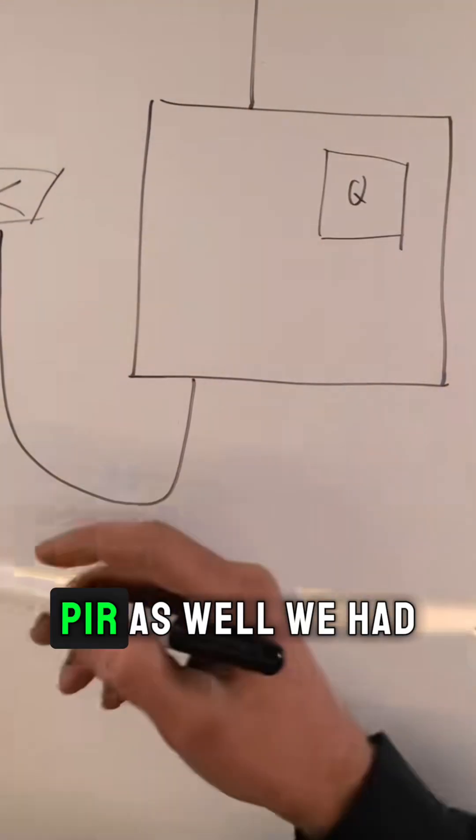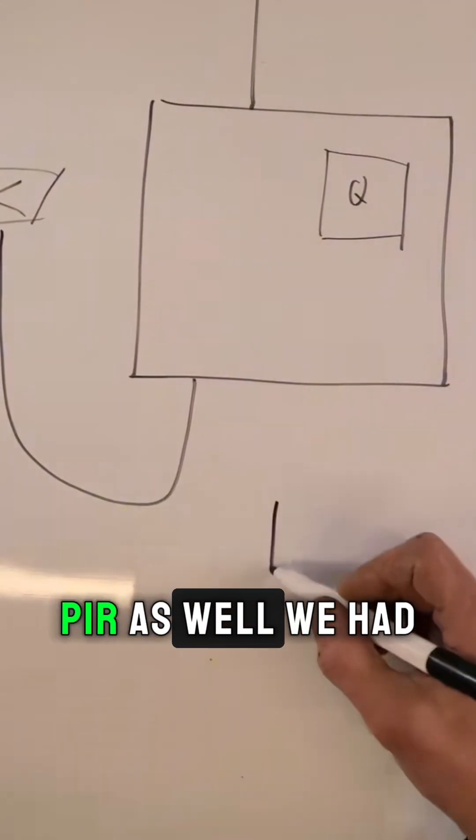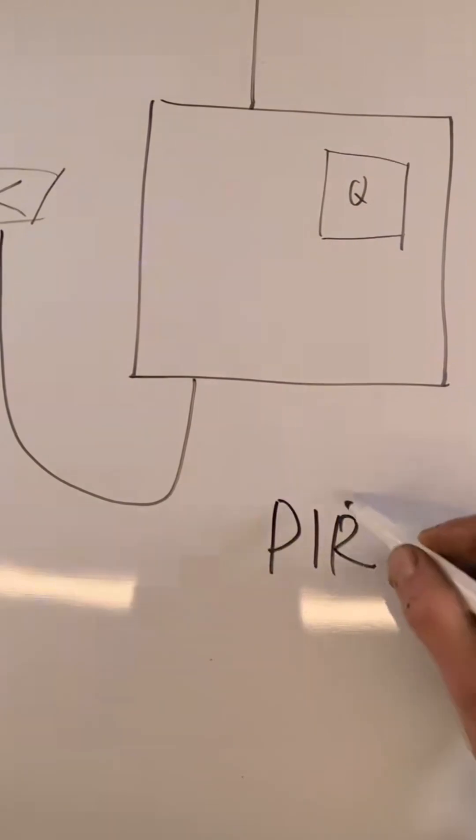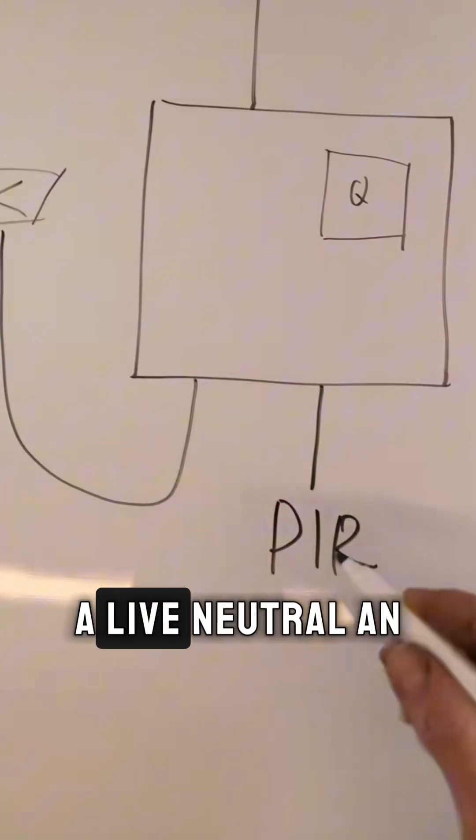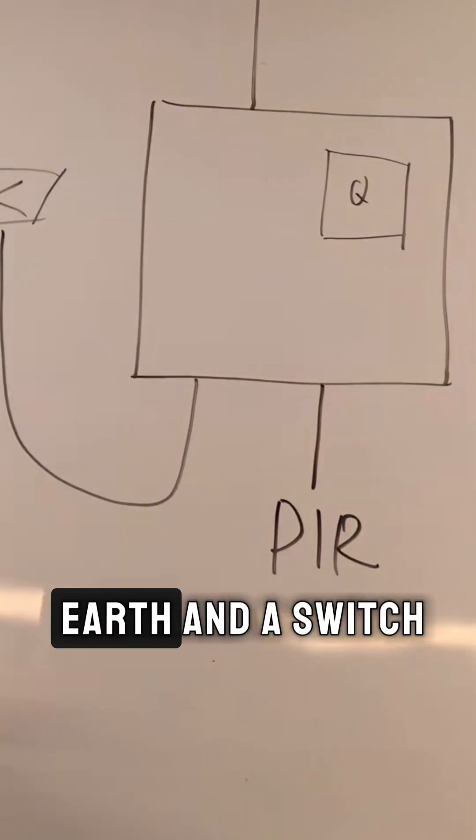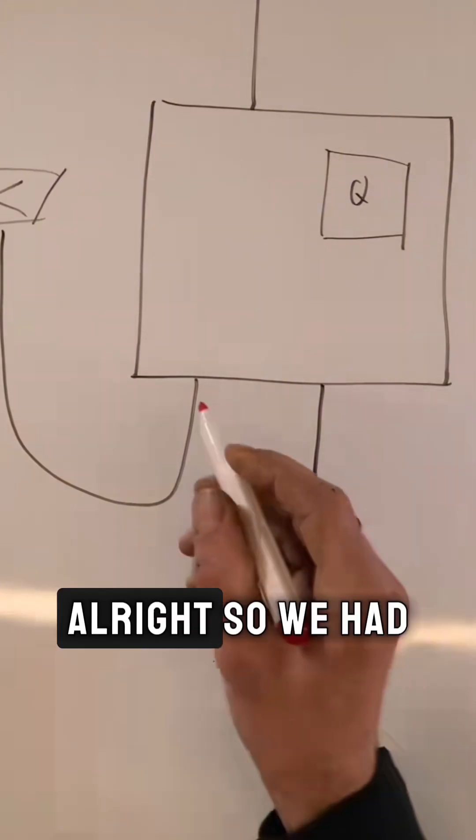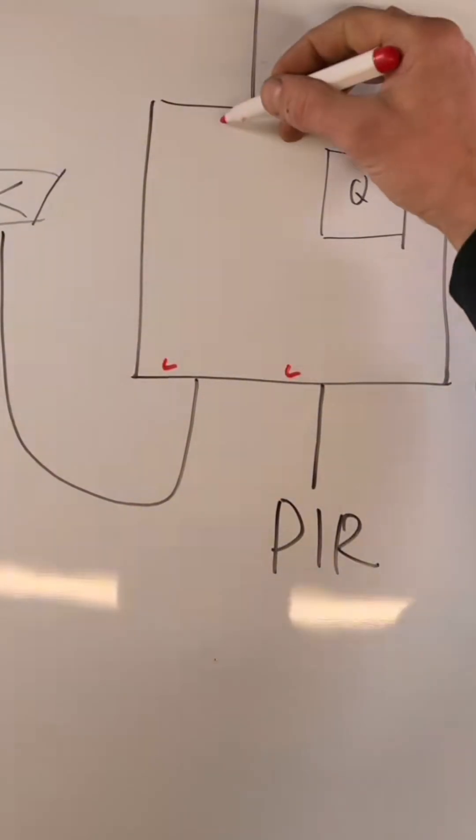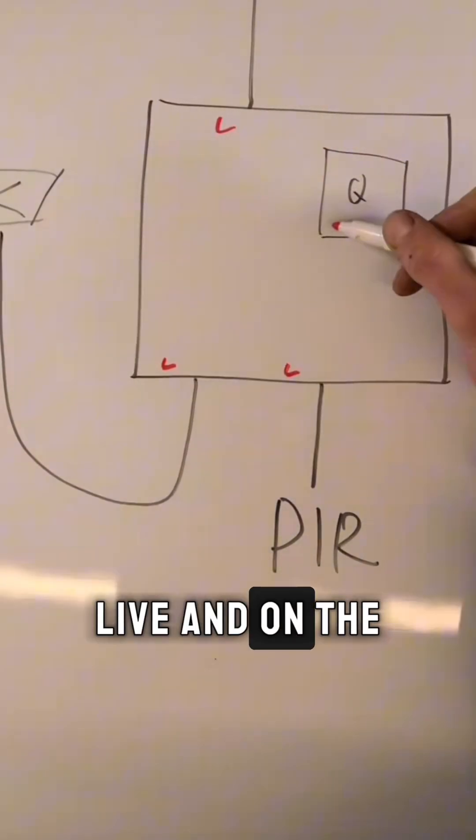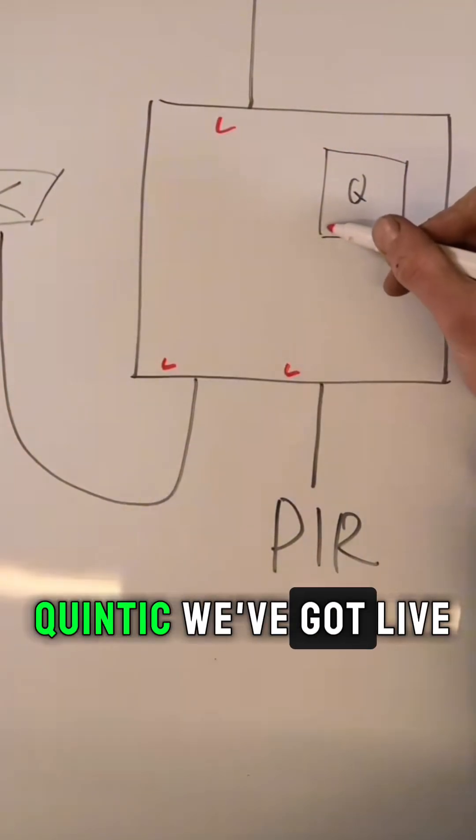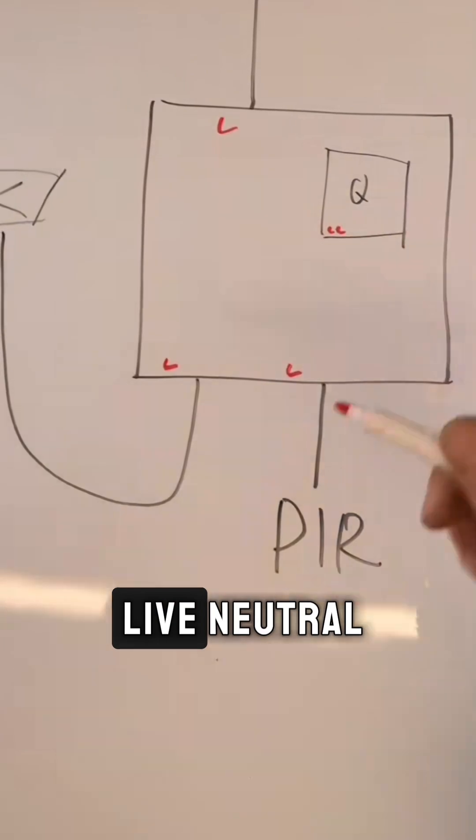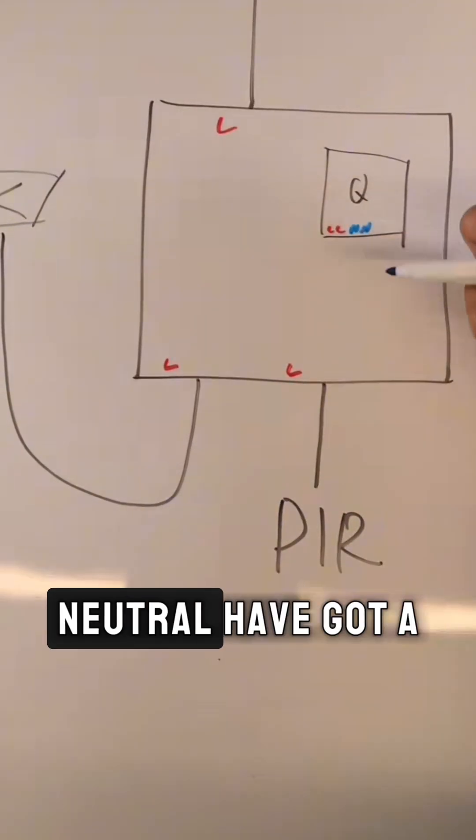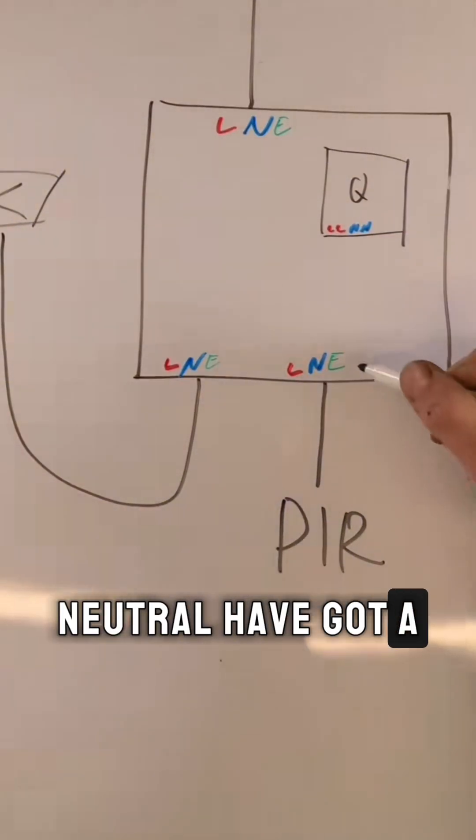And then from the light we had a live, neutral and earth, PIR as well. We had a live, neutral and earth and a switch. So we had a live, live, live, and on the Quinetic we've got live, live, neutral, neutral. We've got a permanent live.